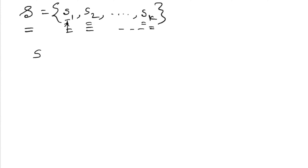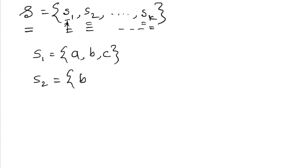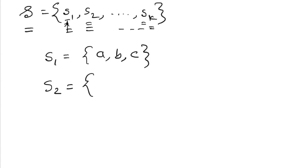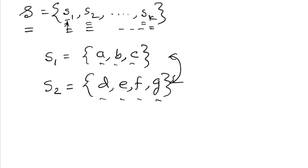Let's go with an example. Let's say that s1 equals some elements like a, b, and c. s2 has elements b, c, and d. s1 and s2 are not disjoint — in disjoint sets there should not be anything in common. If we have s1 equals {a, b, c} and s2 equals {d, e, f, g}, then these two sets are disjoint because there is no element in common between s1 and s2.